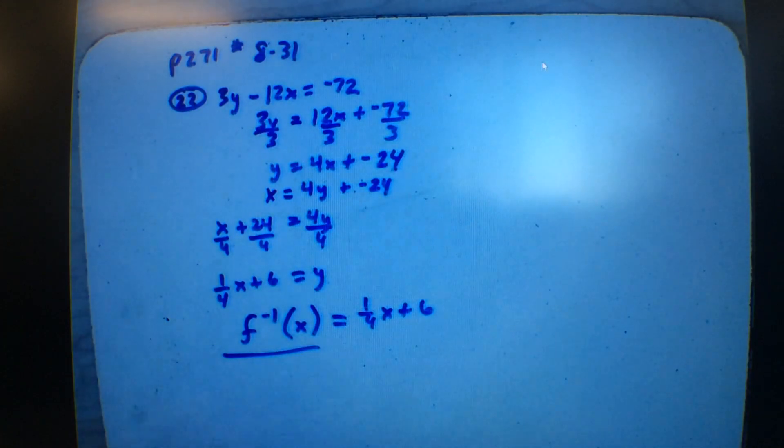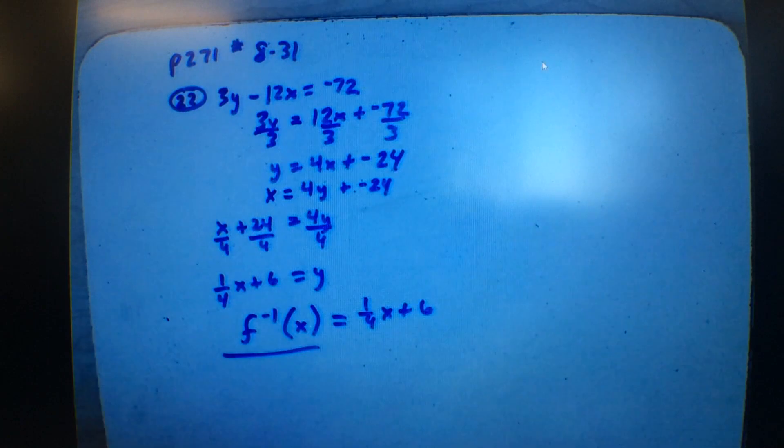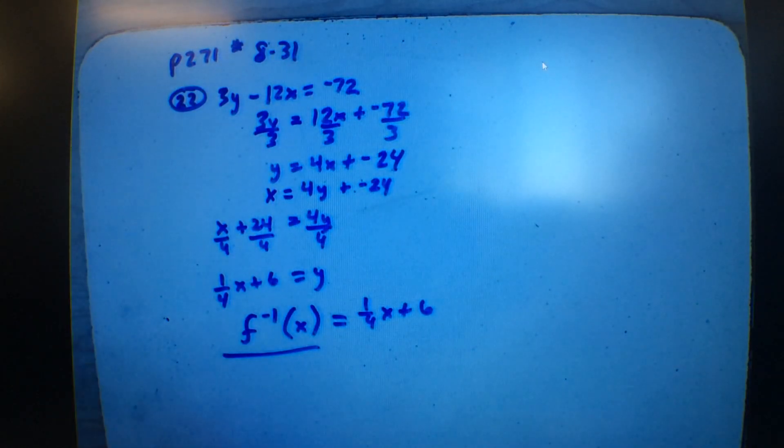Questions? And then 28 through 31, we just matched the graph with the graph of its inverse. Okay? So they have an equation. You give the letter of the graph. All right? This is not due tomorrow. You have tomorrow to work on it. But some of you will be gone. So you might want to get started and try to get as much done today as you can. Okay? Good luck.